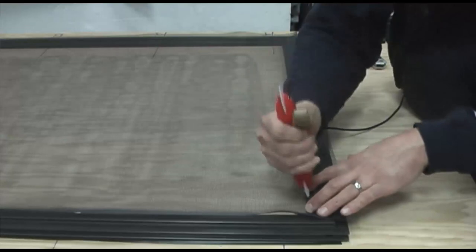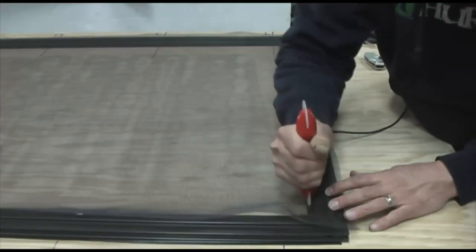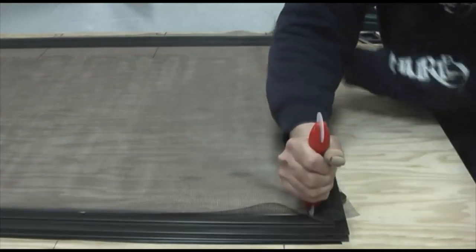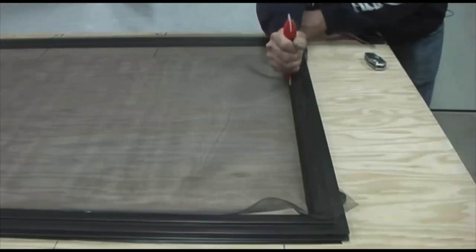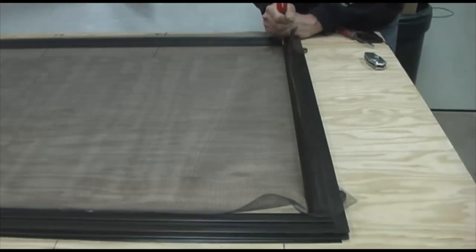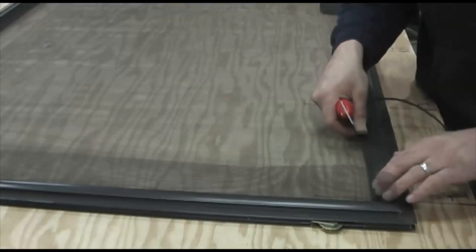Now, take your roll of spline and install it on one short side of the screen. You install it by pressing it firmly into the spline channel and rolling it in with your roller tool. Also, make sure your screen stays straight with the rest of the door.